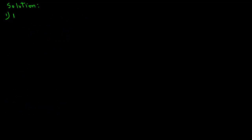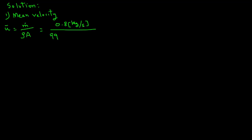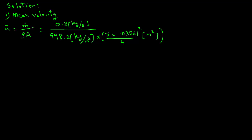The first step is to determine mean velocity. Mean velocity equals mass flow rate divided by density times cross-sectional area. With mass flow rate of 0.8 kg/s, density of 998.2 kg/m³, and cross-sectional area of π × (0.03561)² / 4, the calculation gives a mean velocity of 0.805 meters per second.